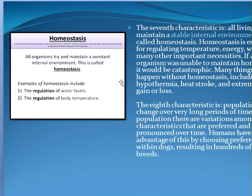The seventh characteristic is that all living organisms need to maintain a stable internal environment — homeostasis. We maintain our internal body temperature at about 98.6°F or 37°C. We would die if our temperature goes up to 107 or 108°F. Homeostasis regulates things like temperature and water balance. For example, when in the desert, we sweat, and the evaporation of that sweat cools the body down — that's a mechanism for maintaining a stable internal environment.